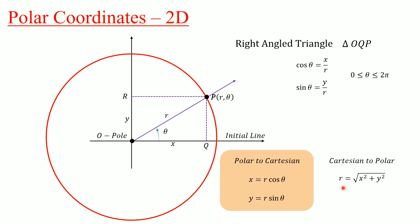We take R as a non-negative value. Therefore R equals the square root of x² + y², and theta equals arctan(y/x). So here we can get polar coordinates from Cartesian coordinates.